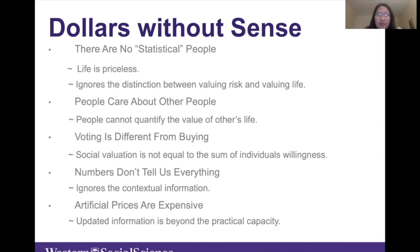Since cost-benefit analysis relies on estimates of individuals' preferences as consumers, it fails to address the collective choice presented to society. Policies that protect the environment are often public goods and are not available for purchase in individual portions, and it is often impossible to arrive at a meaningful social valuation by adding up individuals' willingness to pay. Numbers don't tell us everything — for ultimate values such as life and death, the social context is decisive. Cost-benefit analysis assumes the existence of generic risks, thereby ignoring the contextual information that determines how many people think about real risks to real people.